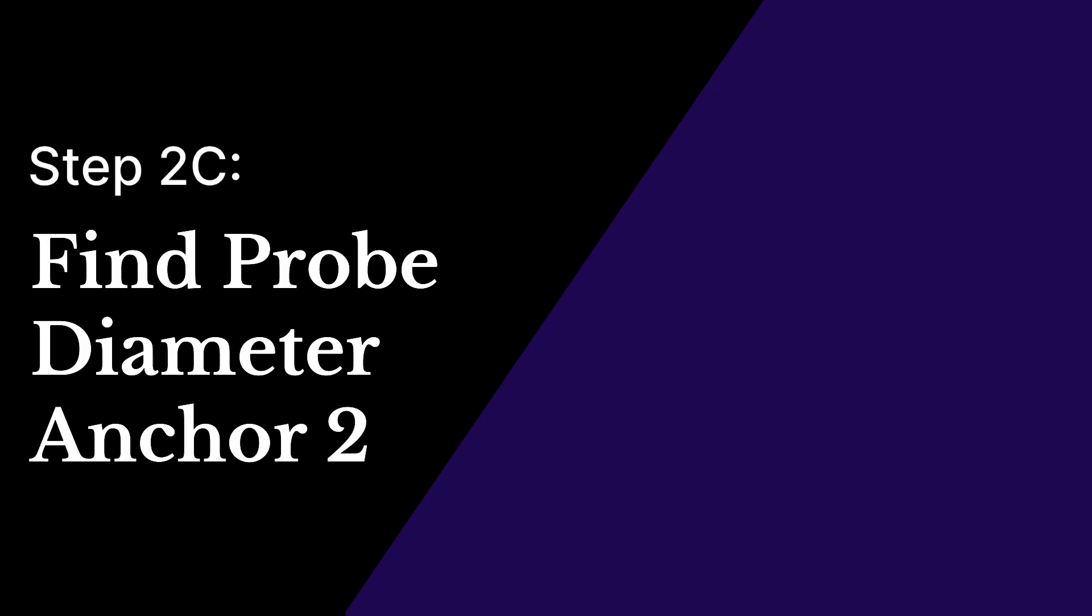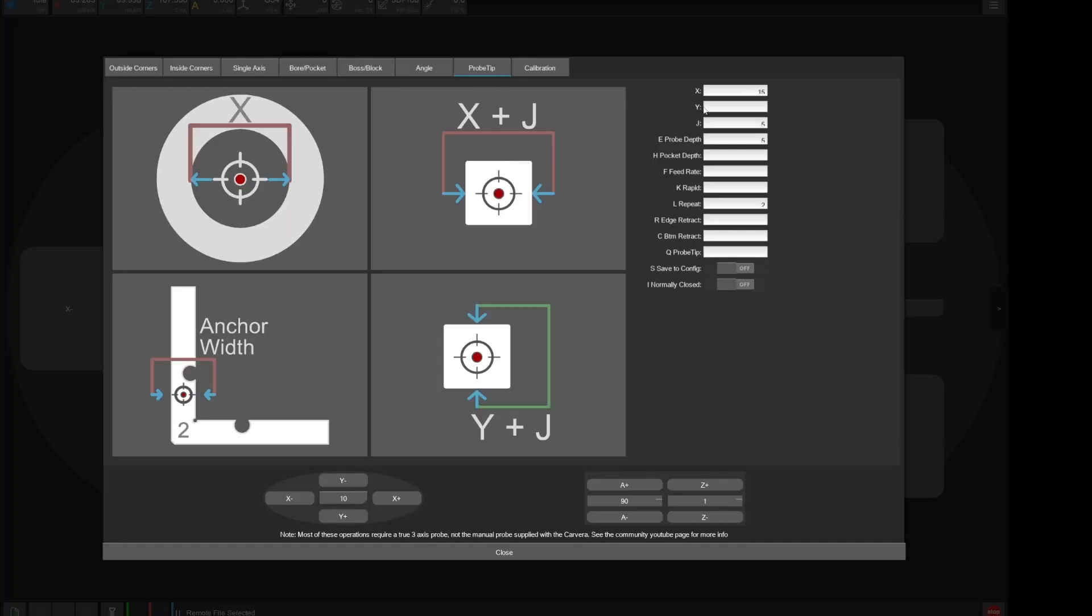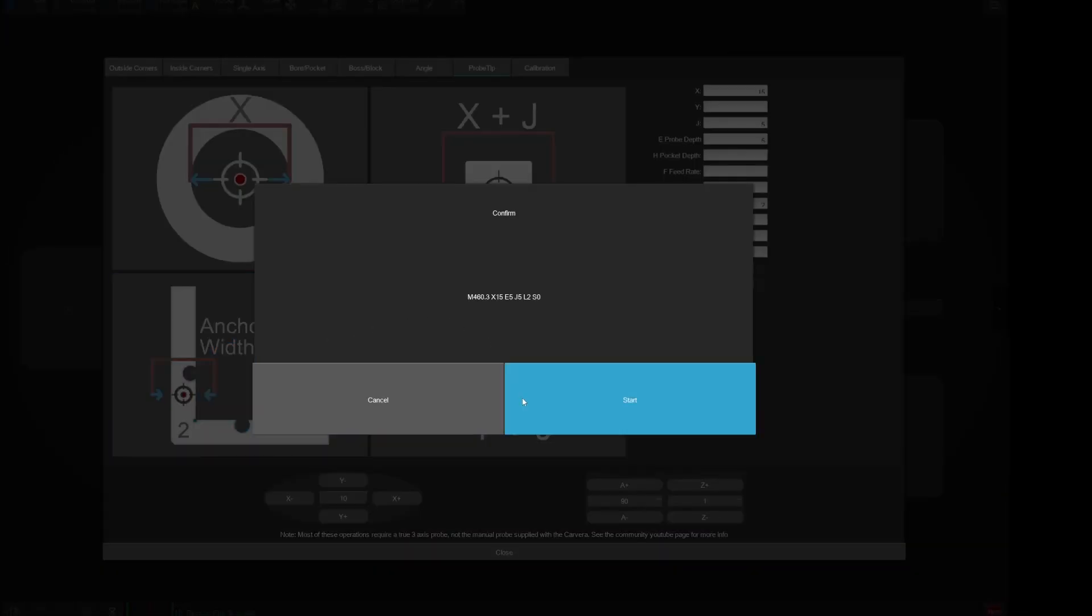The last method for calibrating the probe tip diameter is to use anchor 2. Start by accurately measuring the width of anchor 2 and input that value into the machine advanced settings. Then restart, install anchor 2 and set your tool to 3D probe. Then run the calibrate by anchor 2 button. It will automatically move to the correct position and perform the probing procedures.